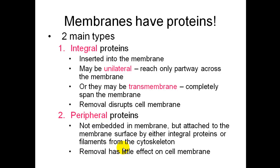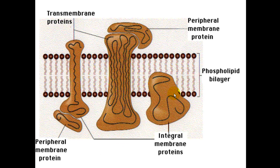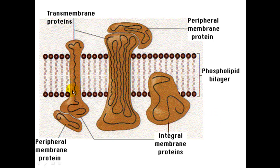If you remove an integral protein, you will disrupt the cell membrane. But if you remove a peripheral protein, because it's not embedded, its removal will have little effect on the membrane. Here is a peripheral membrane protein attached to integral membrane proteins. The unilateral one goes only partway through, while transmembrane proteins go completely through the phospholipid bilayer of polar heads and nonpolar tails.